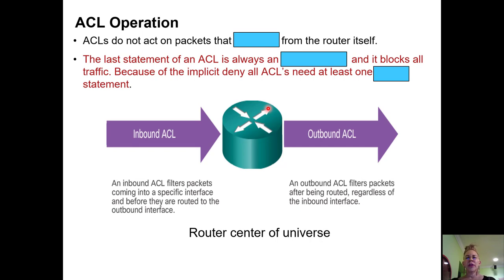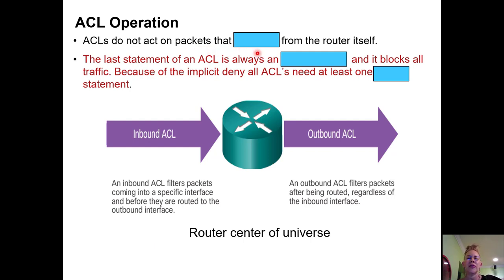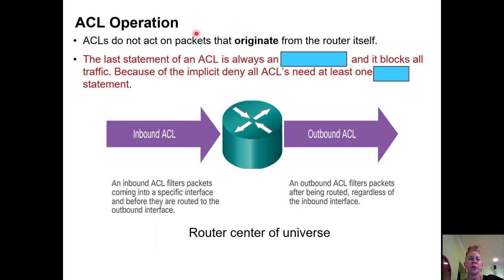There's a particular time when an access control list doesn't do anything. Access control lists do not act on packets that originate from the router itself. If the routers are attempting to talk to each other to make adjacencies — sharing hello information, router IDs, hop counts, etc. — they will not apply an access control list to itself.